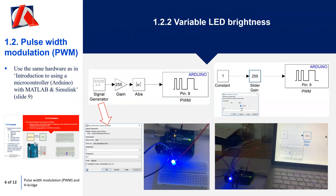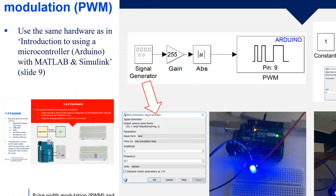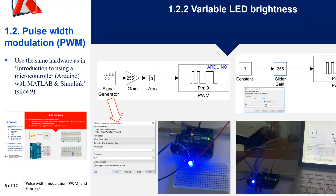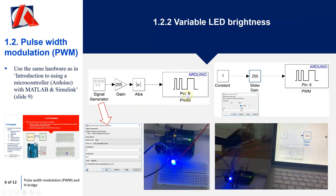Looking at an example — I've used the hardware from the Series 1 video on the introduction to using a microcontroller with MATLAB and Simulink. In software, I've got pin 9 with a pulse width modulation block. The input is a signal generator using a sine wave with amplitude of 1 and frequency of 0.7 radians per second. Because PWM reads values between 0 and 255, I've multiplied the signal generator output by 255, so when amplitude is 1 it produces 255, applying the full 5 volts.